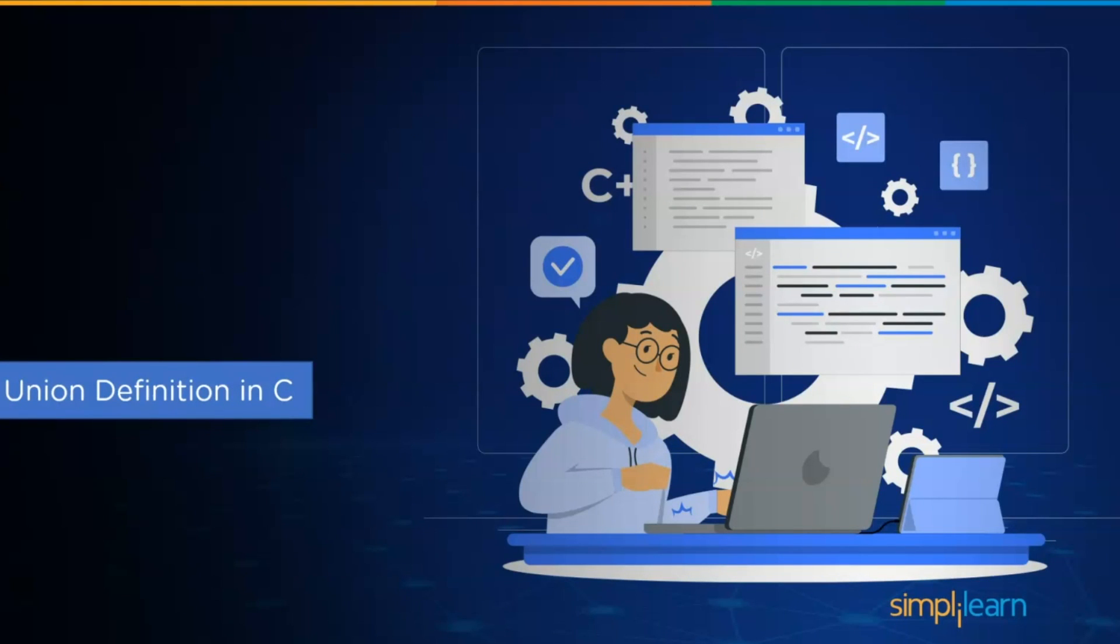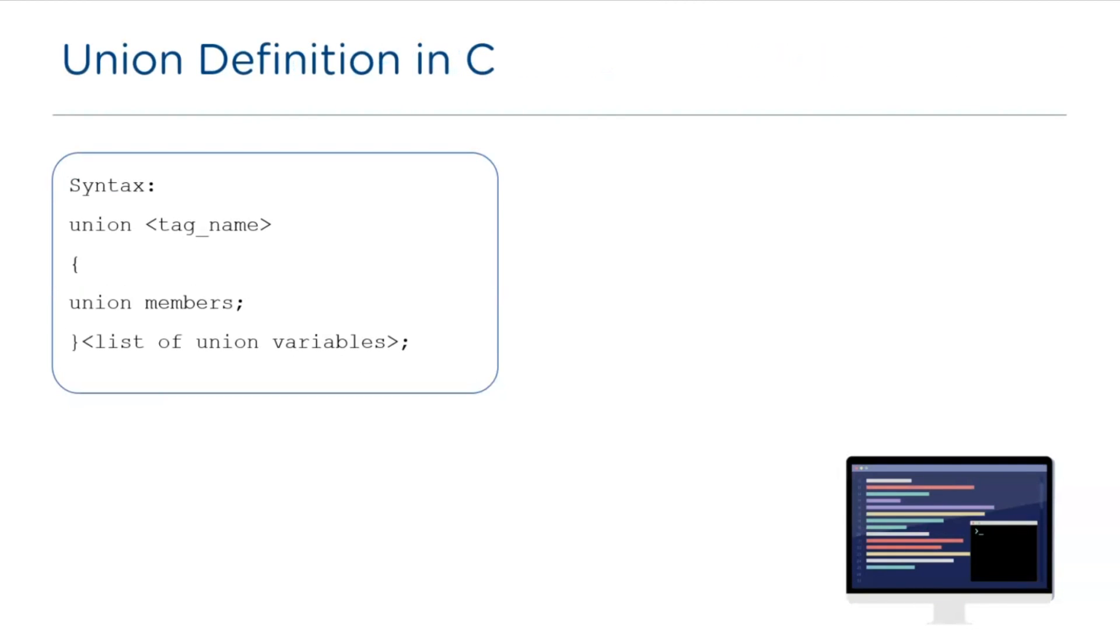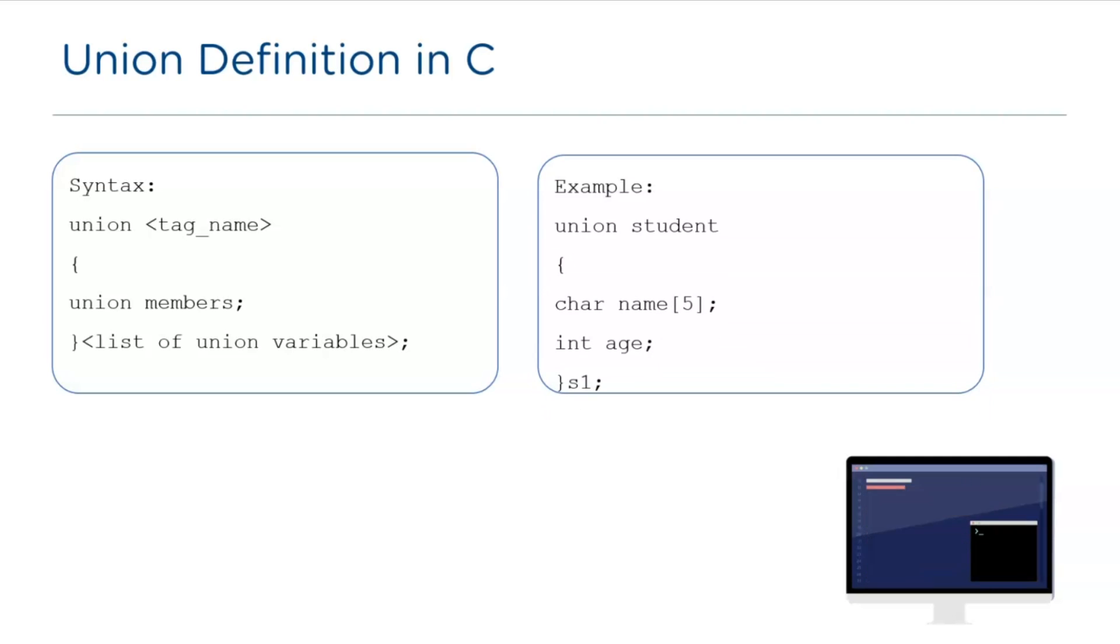Now, let's have a look at a union definition in C. The union definition starts with the keyword union and is followed by tag name or union name, then a list of union members inside the curly brackets and finally a union variable declaration. For example, the definition begins with the keyword union, then student as a tag name, and the union members are name of type char and age of type int, followed by s1 as a union variable name.